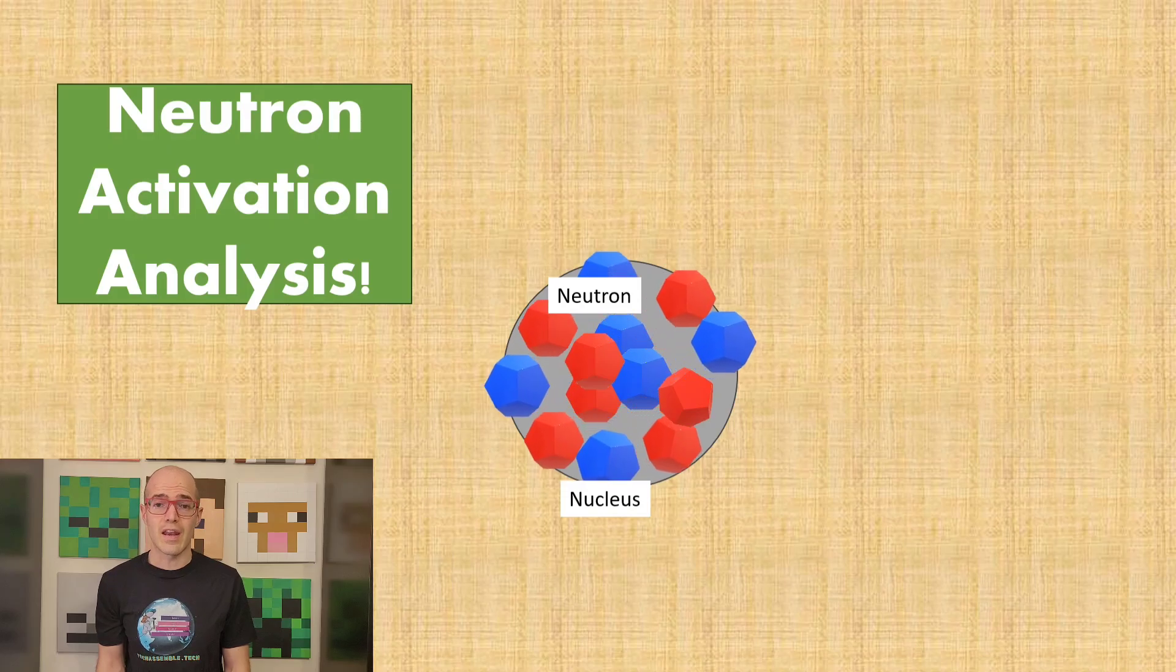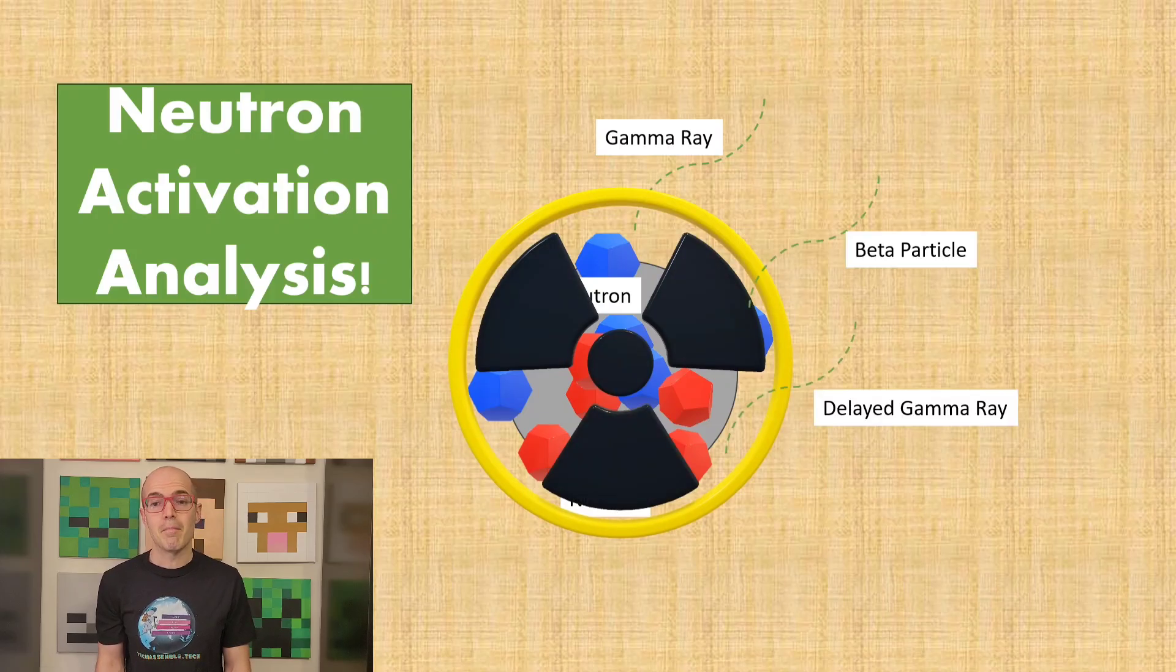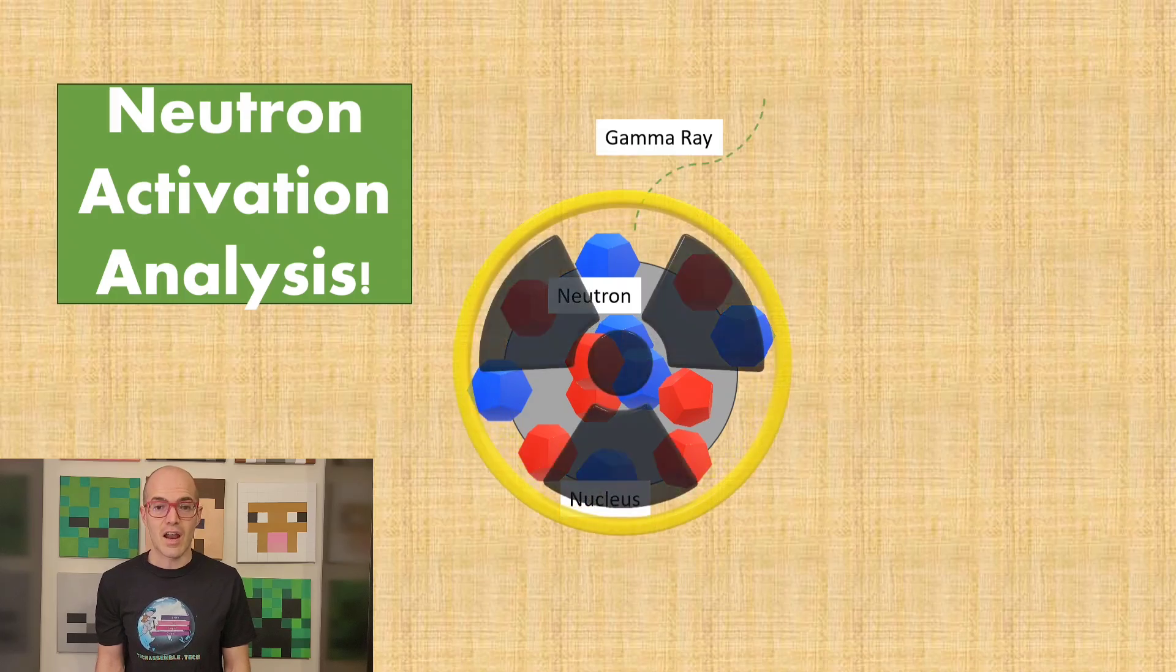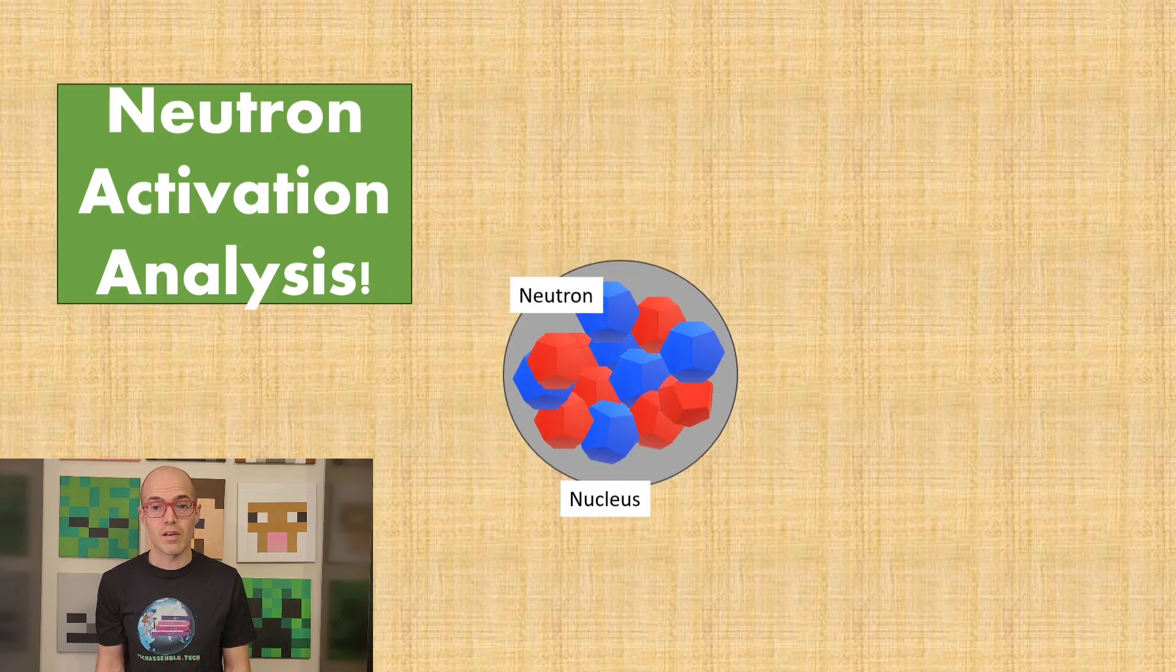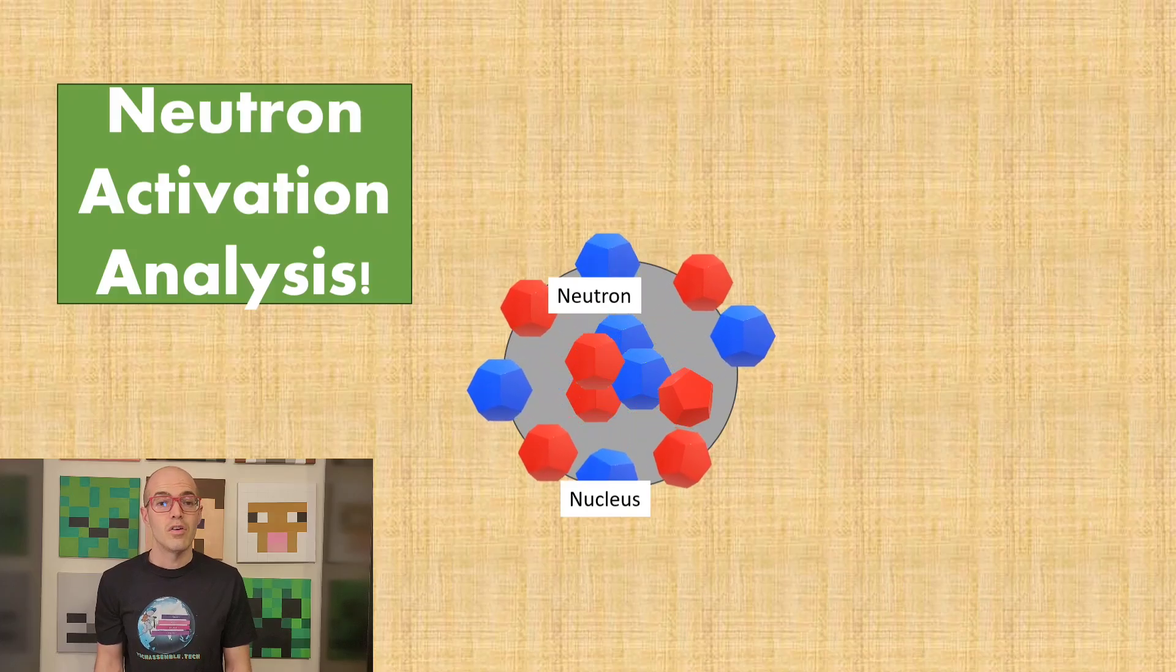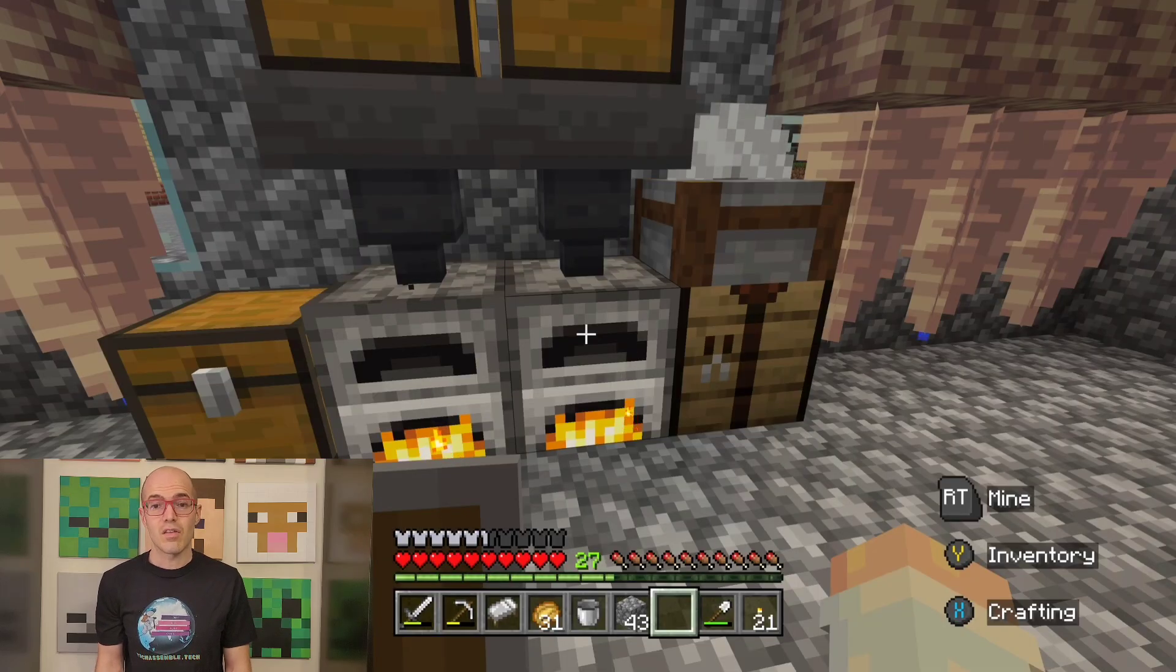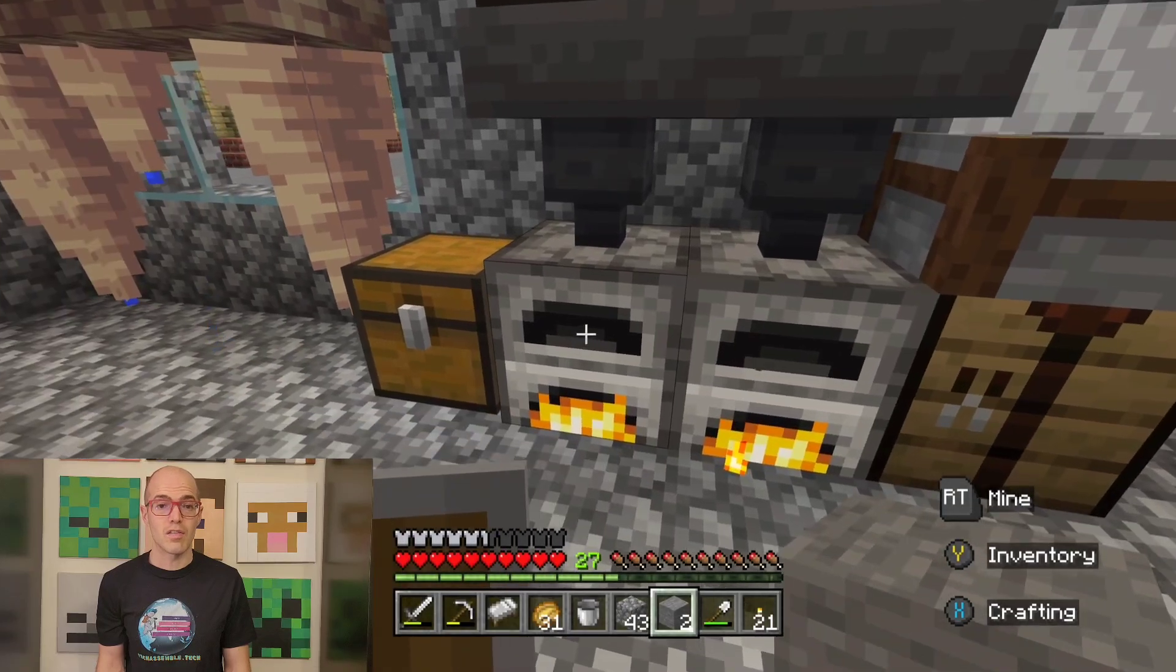In the field of nuclear medicine, neutron activation analysis, or NAA, is a powerful analytical technique used to determine the elemental composition of samples. By bombarding the sample with neutrons, typically from a nuclear reactor or particle accelerator, certain atoms within the sample become activated. These activated atoms emit characteristic gamma rays, which are detected and analyzed to identify the elements present in the sample and quantify their concentrations. Neutrons serve as the key component in this analytical process, triggering the activation of atoms without altering their chemical properties. NAA is employed in various applications, including forensic analysis, environmental monitoring, and archaeological research, highlighting the crucial role of neutrons in scientific investigations.